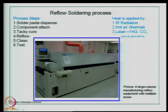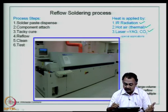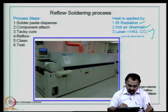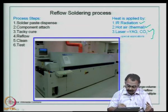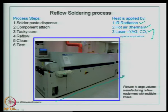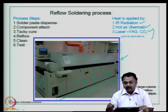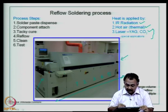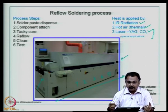What are the methods of reflow soldering? Heat in reflow soldering processes can be applied by infrared radiation, thermal air, convection air, or laser using YAG (yttrium aluminum garnet) or CO₂ — typically for special applications. The picture shown is a large-volume manufacturing reflow equipment with multiple zones. It is a fairly large equipment with five or more process zones before the board comes out. The board is fed on one side and exits on the other side after cooling to room temperature.